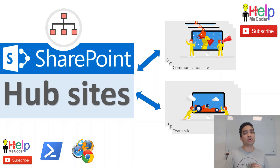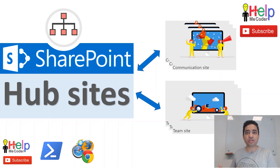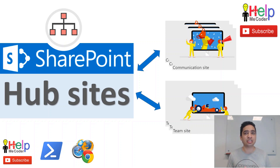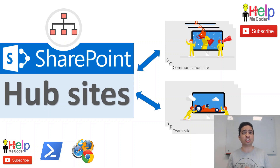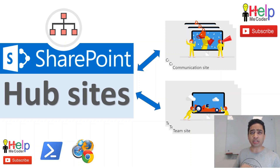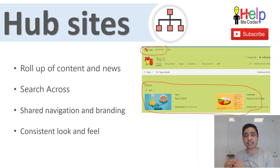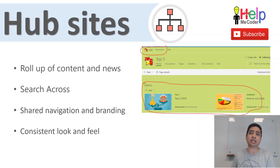Here we are going to discuss Hub Sites — the new way to structure your content. When we talk about structuring content, we are accustomed to the concept of sub-sites and site collections, which we have been using for ages. For on-premises, Hub Sites have not been rolled out yet, but for Office 365, Hub Sites are a game changer. A Hub Site is a site that helps you aggregate content from various associated team sites and communication sites.